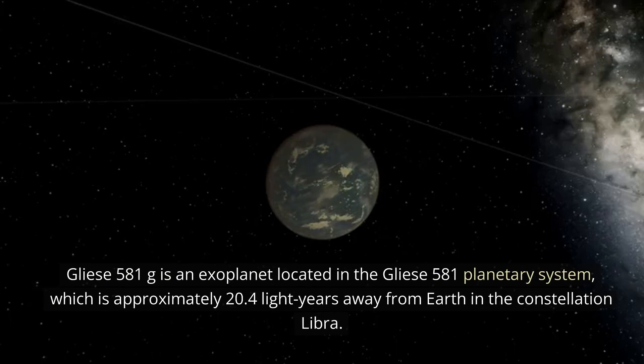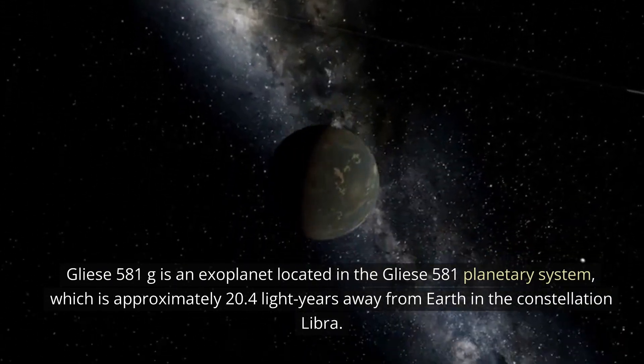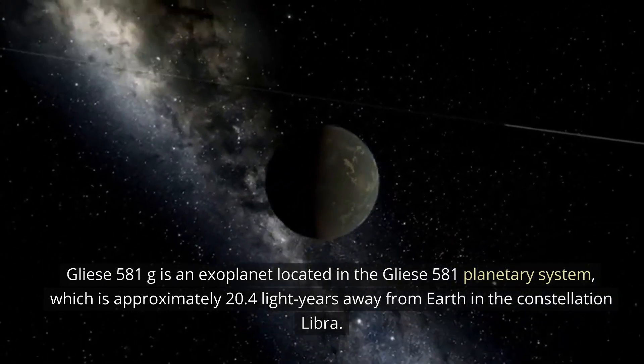Gliese 581g is an exoplanet located in the Gliese 581 planetary system, which is approximately 20.4 light-years away from Earth in the constellation Libra.